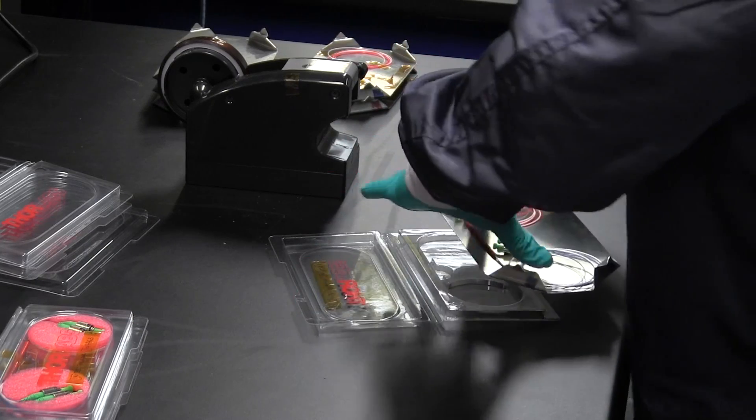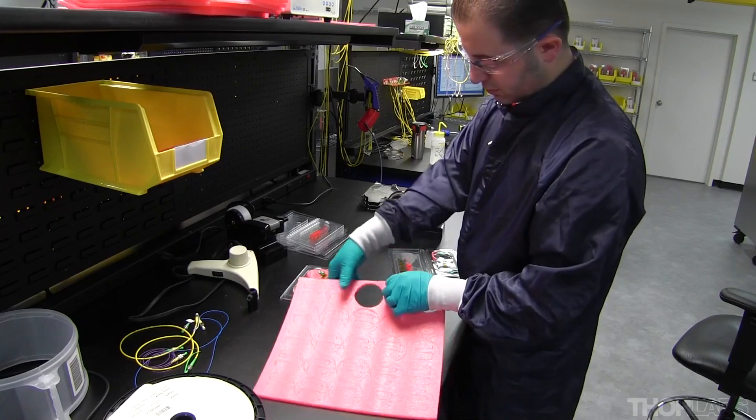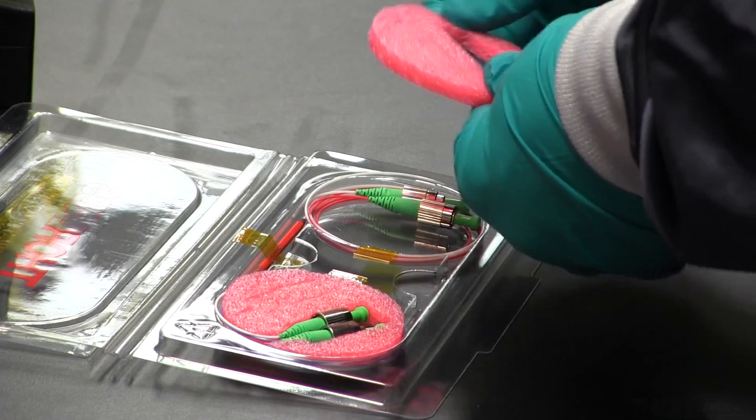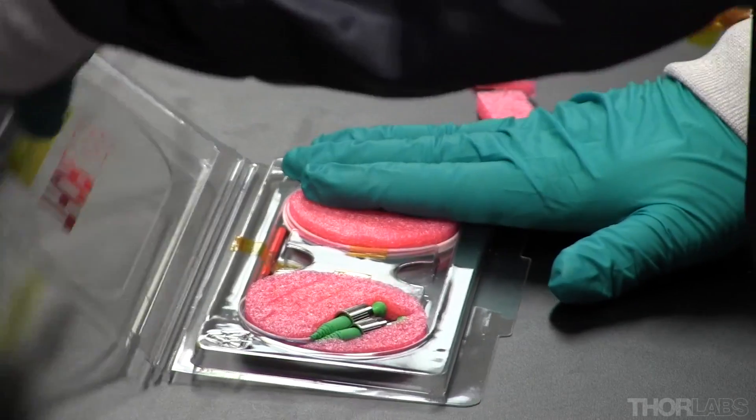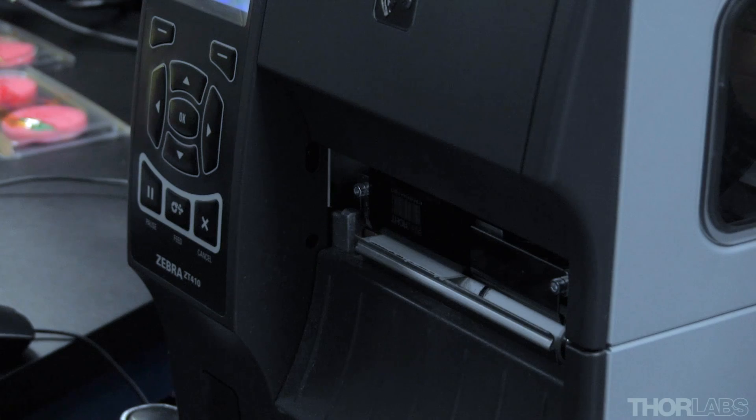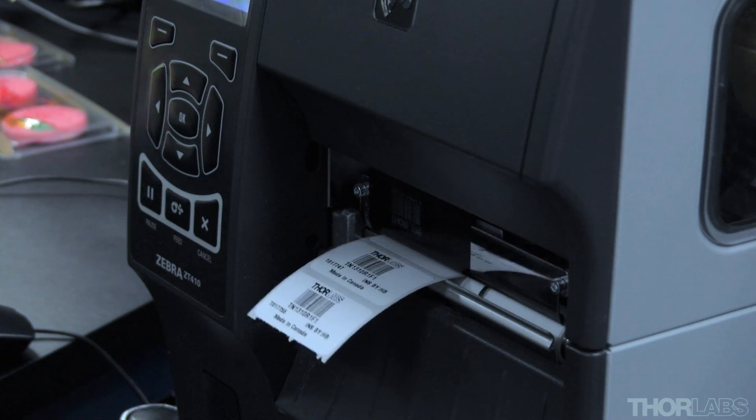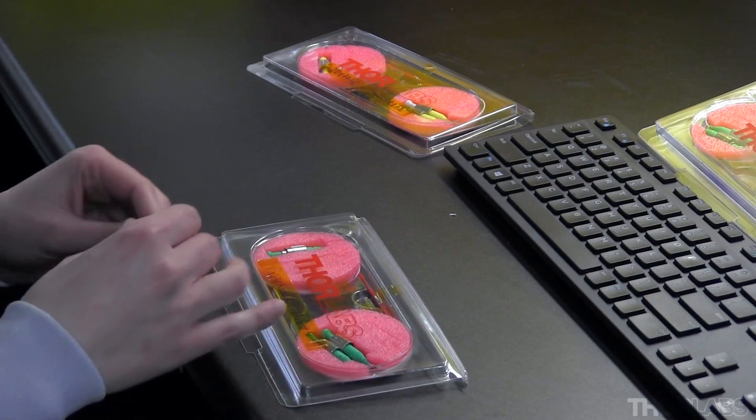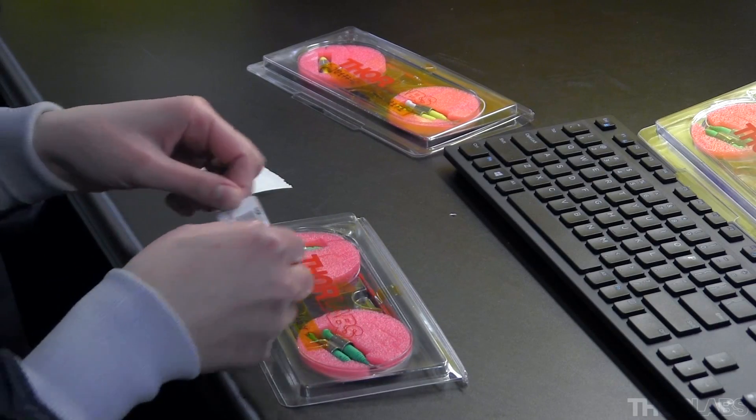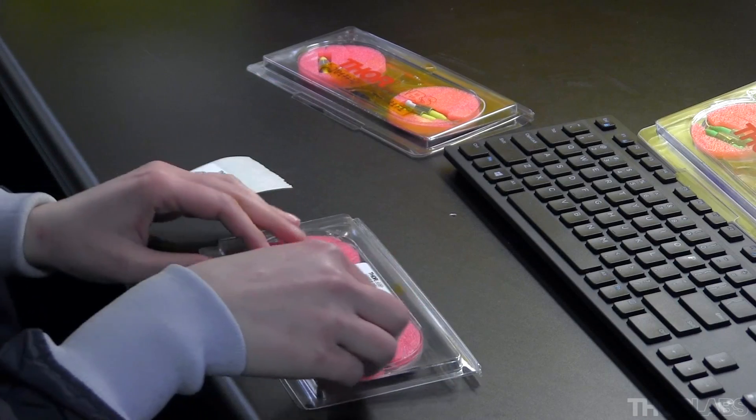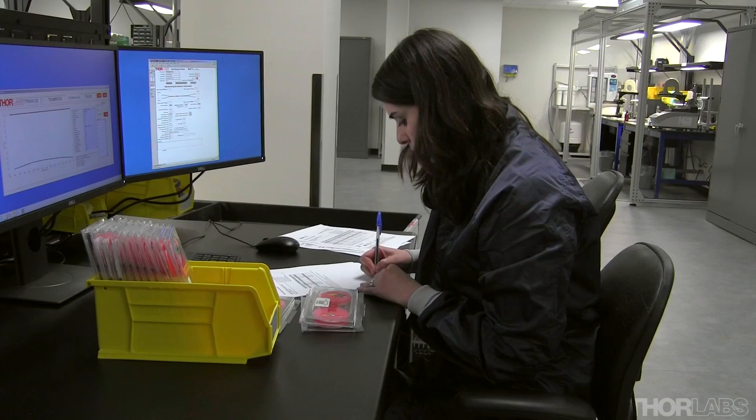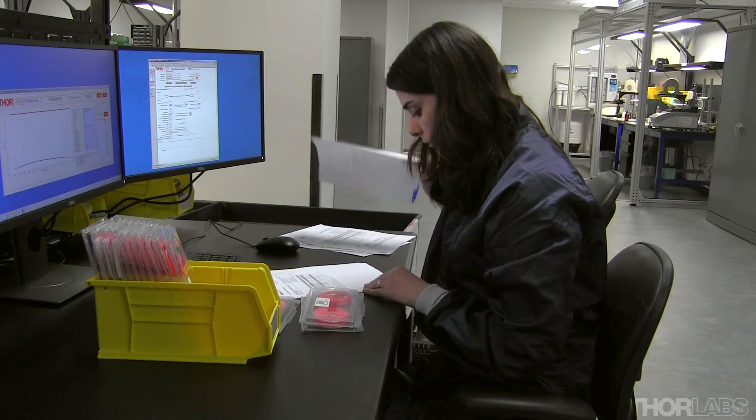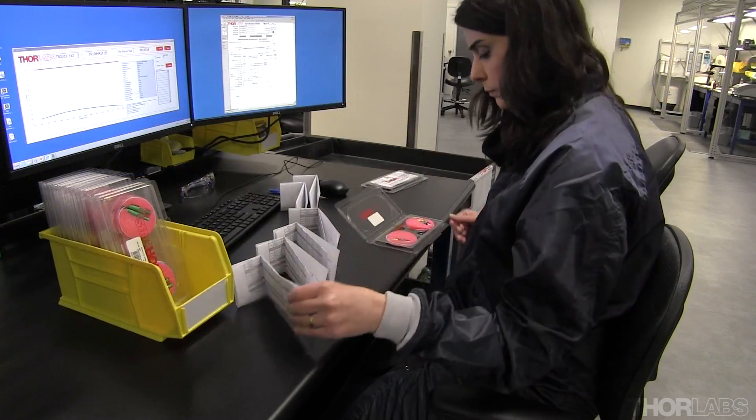Fiber couplers meeting all specifications are then packaged. Protective foam is added to keep the fiber from bending during storage and shipping. A label is printed showing the item number and serial number. And a product data report created from the device's test data is included with each coupler sold.